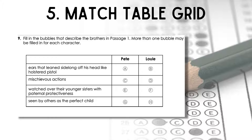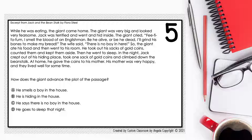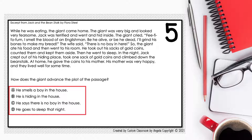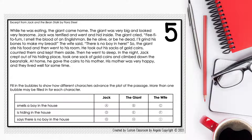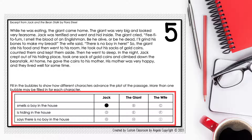The fifth item type is match table grid, where students have to select the correct answer from a table. In the past, students would see a multiple choice question with four choices. Now the question will have students select all the correct answers to the question found within the table.